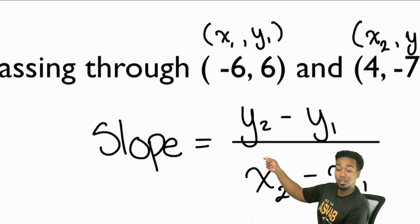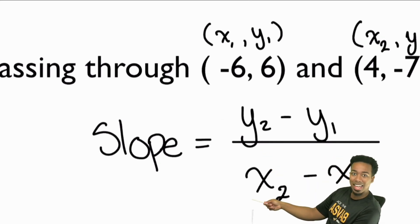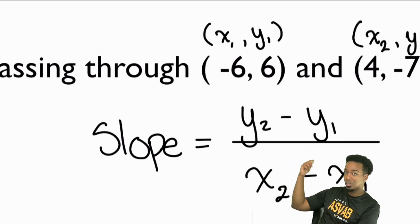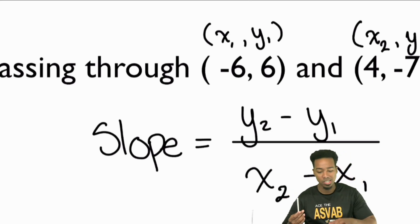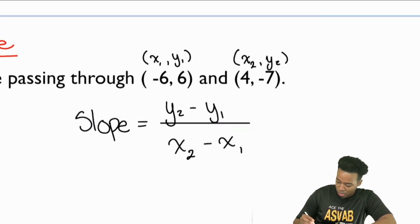Notice how it's the second y with the second x. Both of those start first. You can swap them if you want to. You can do y1 minus y2. But in the bottom, you'll have to start with x1 minus x2. It's really about consistency. So the first thing you need to do is just plug your numbers in.